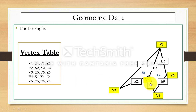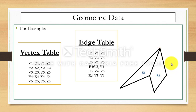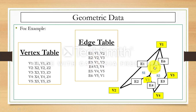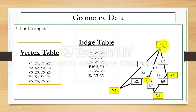Next we have edges. We will represent the edges as e1, e2, e3, e4, e5, e6. For the edge table: for edge e1, the vertices are v1 and v2; for edge e2, the vertices are v2 and v3; for edge e3, the vertices are v1 and v3; for edge e4, the vertices are v3 and v4; for edge e5, the vertices are v4 and v5; and for edge e6, the vertices are v1 and v5.